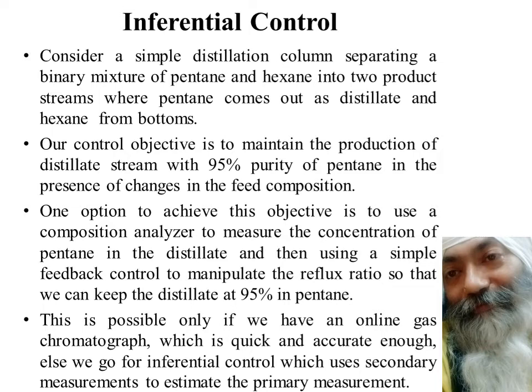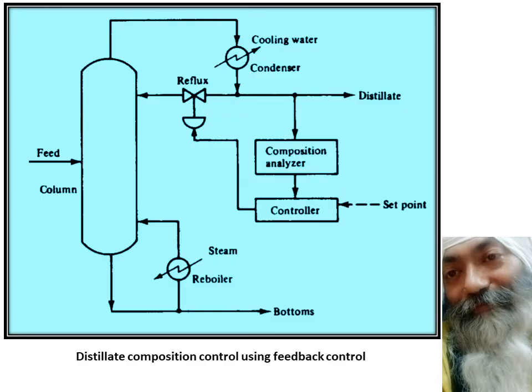In the absence of measured composition from the outlet, we go in for a special kind of control called inferential control. This inferential control makes use of secondary measurements like temperature and so on to estimate the primary measurement — in this case, the composition of the distillate.